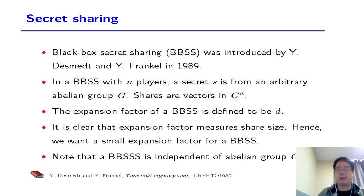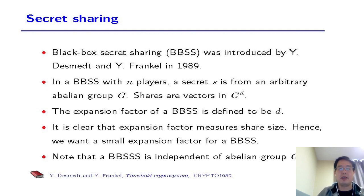Black box secret sharing was introduced by Desmet and Franca in 1989. In a BBSS with N players, a secret S is from an arbitrary abelian group G, and shares are vectors in a D-dimensional space over G. The expansion factor of black box secret sharing is defined to be D. The expansion factor measures the share size, so we want a small expansion factor.